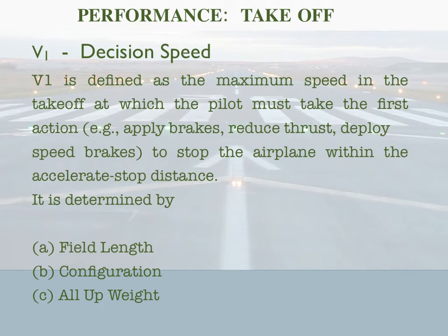V1 is the decision speed. V1 is defined as the maximum speed in the takeoff at which the pilot must take the first action — for example reduce thrust, apply brakes, deploy speed brakes — to stop the airplane within the accelerate stop distance. V1 is determined by field length, configuration, and all-up weight. By end of the lesson you will realize that V1 is a very crucial and important speed. We will be discussing V1 in great detail throughout our lesson.